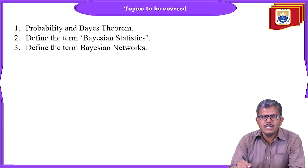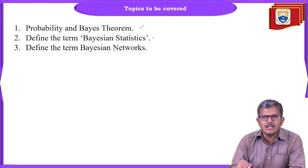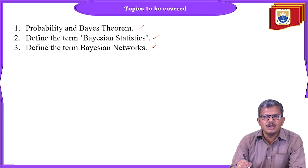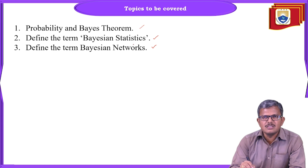Instead of just giving true or false, we are going to study probability and statistical methods where we give some numerical value in order to support or oppose a particular evidence. For that, we need to study in module four about probability, Bayes theorem, Bayesian statistics, and Bayesian networks.